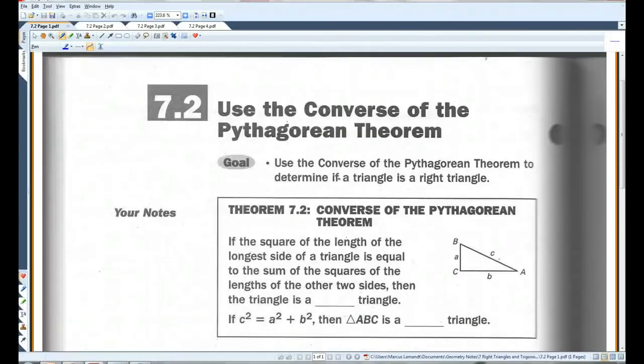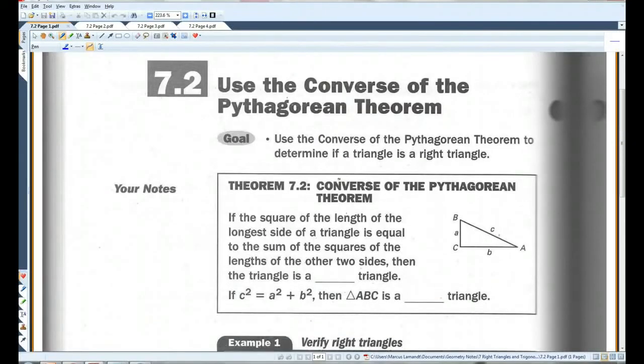Alright, 7.2, use the converse of the Pythagorean Theorem. So hopefully you guys remember the Pythagorean Theorem: C squared equals A squared plus B squared, or A squared plus B squared equals C squared, however you want to write it.